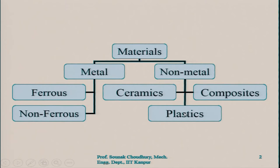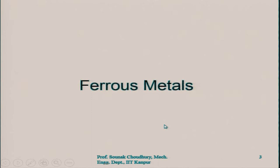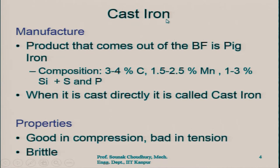Under the ferrous metals the most popular is the cast iron. Cast iron is the product which comes out of the blast furnace — that is the big pig iron initially. The composition of pig iron is about 3 to 4 percent of carbon, 1.5 to 2.5 percent of manganese, 1 to 3 percent of silicon, and sulphur and phosphorus additionally. This is the product which comes out of the blast furnace — known as pig iron. When this pig iron is cast directly, that is known as the cast iron.